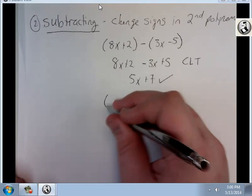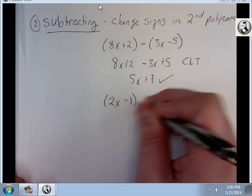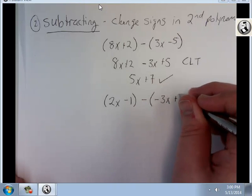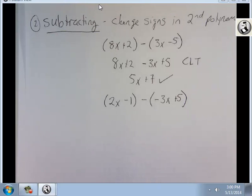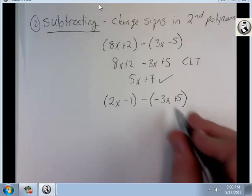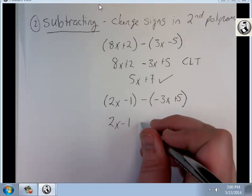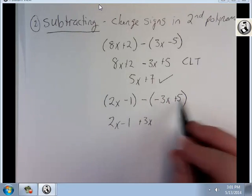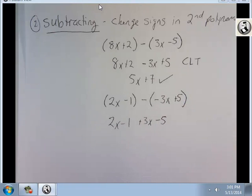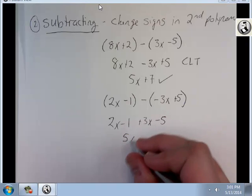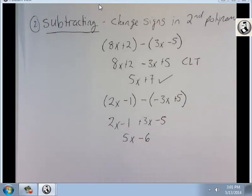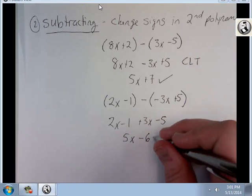2x minus 1 minus negative 3x plus 5. Same thing as before. I'm going to change my signs on my second one. 2x minus 1 minus negative 3 is plus 3x. Now I'm going to change the sign on that to be minus 5. Now I can CLT. 2x and 3x is 5x. Minus 1 minus 5 is minus 6. And that's subtracting polynomials. Fairly basic.